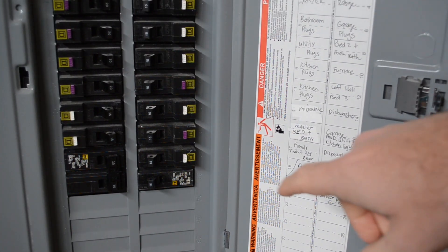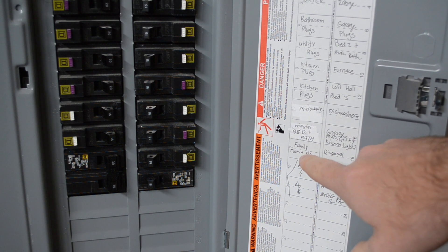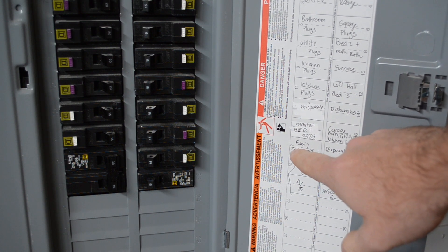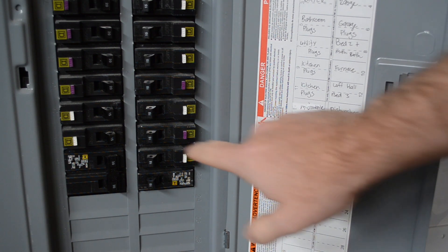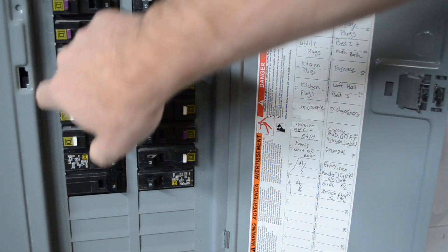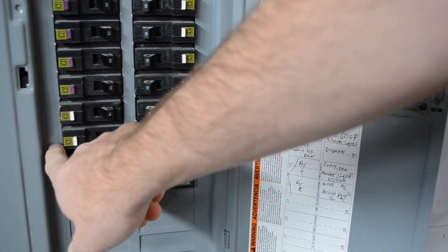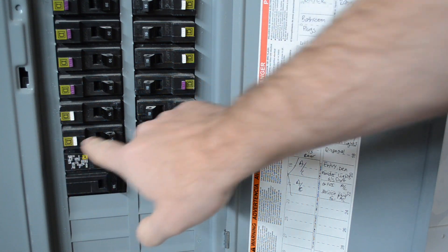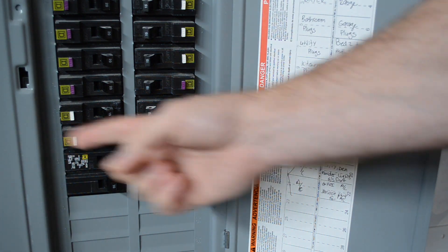For the area that we are working on is the family room which is labeled as number 17. So if you look on the box there are numbers along the side here. We look for number 17 which is right here. And then we just throw this switch off.